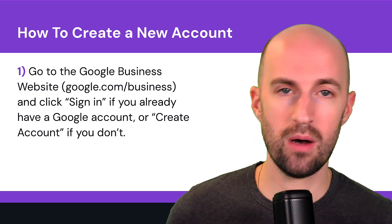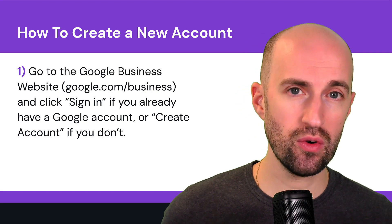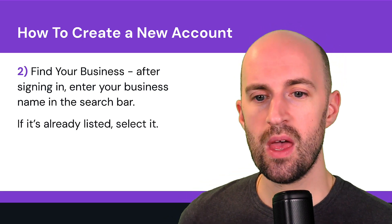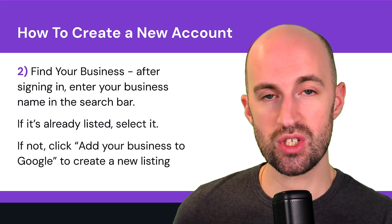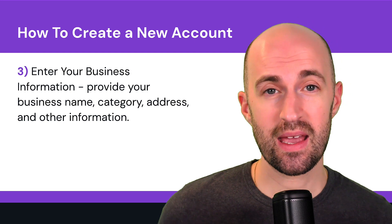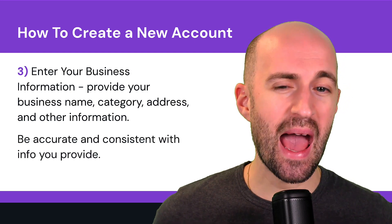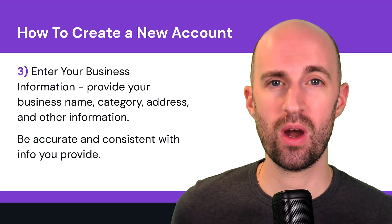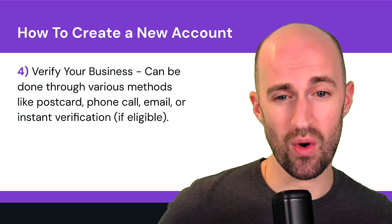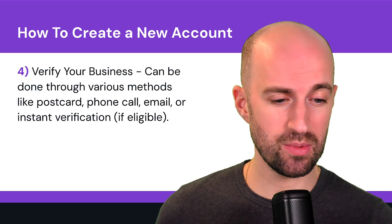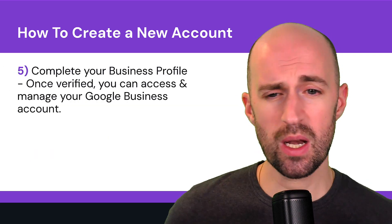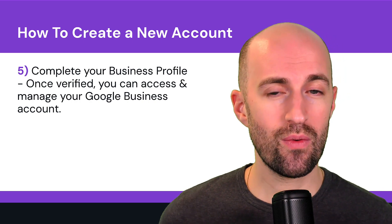How do you create a new account? First, go to google.com/business and click sign in if you have a Google account, or create one if not. Next, enter your business name in the search bar — if it's already listed select it, if not click 'Add your business to Google.' Then provide your business name, category, address, and other required information. Be accurate and consistent with the information you provide across everywhere you've listed it online. Verify your business through a postcard, phone call, email, or instant verification if eligible.